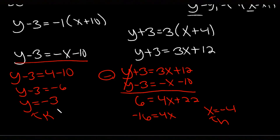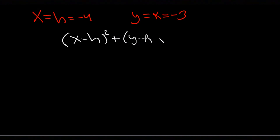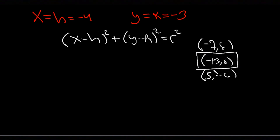Starting a new page — h = -4 and k = -3 is the center of our circle. The equation of a circle is (x - h)² + (y - k)² = r². We have h and k, and x and y can be any one of the three given points: (-7, 6), (-13, 0), or (5, -6). I'll pick (-13, 0) since it has a zero and is easy to work with.